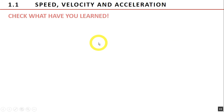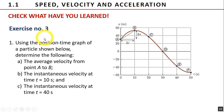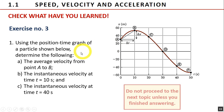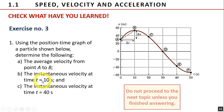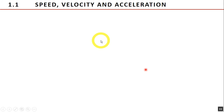Now it's your turn. Answer Exercise 3. Using the position-time graph of a particle shown below, determine: letter A, the average velocity from point A to B; letter B, the instantaneous velocity at time 10 seconds; and letter C, the instantaneous velocity at time 40 seconds. Hello, we meet again. I hope you answered Exercise 3. If yes, then congratulations. If no, then study again, focus more, or talk to your teacher.